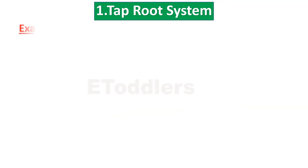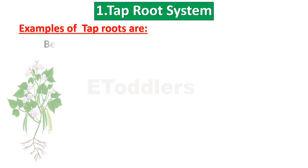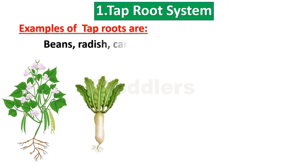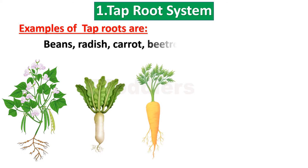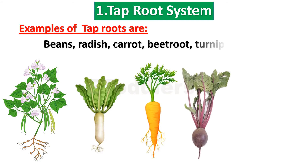Examples of tap roots are beans, radish, carrot, beetroot, and turnip, etc.